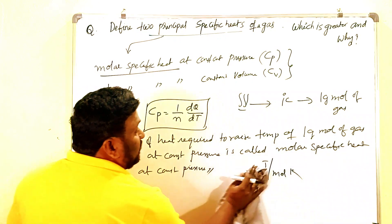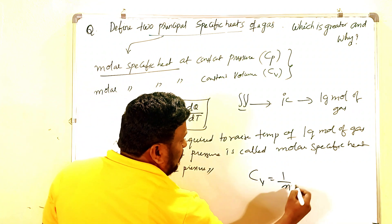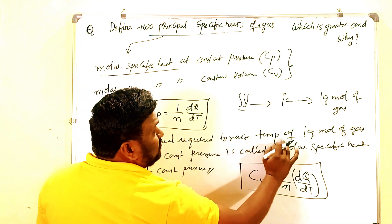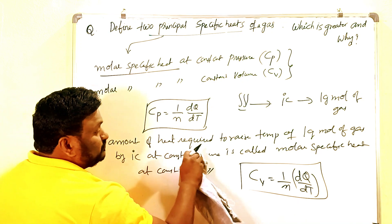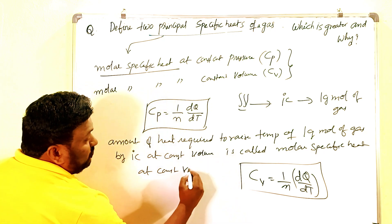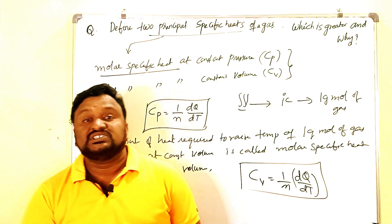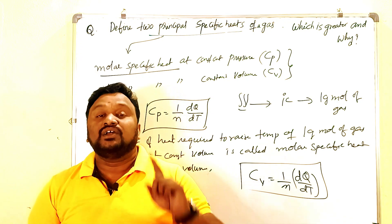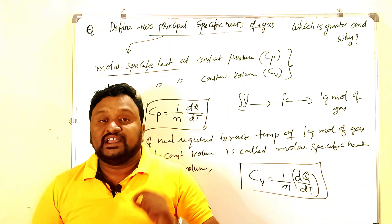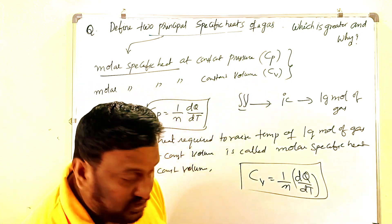Similarly, molar specific heat at constant volume, Cv, is given by Cv = (1/n)(dQ/dT). The definition is: the amount of heat required to raise the temperature of one gram mole of gas by one degree Celsius at constant volume is called molar specific heat at constant volume.